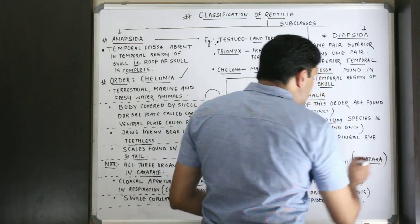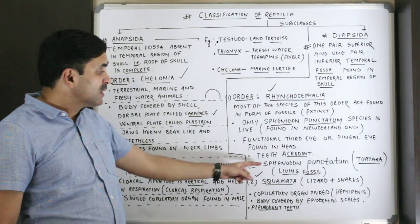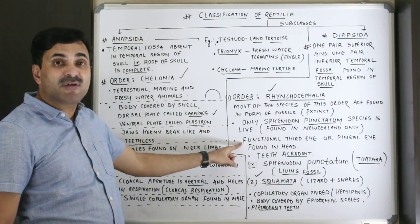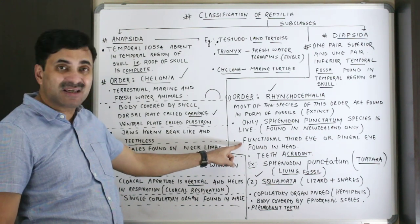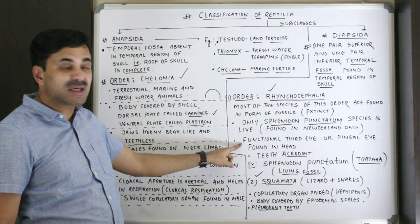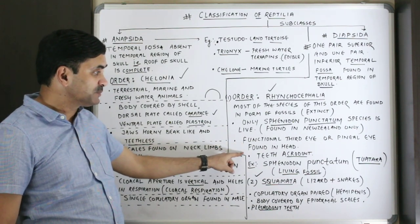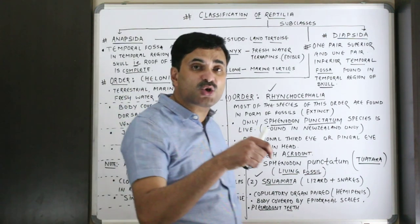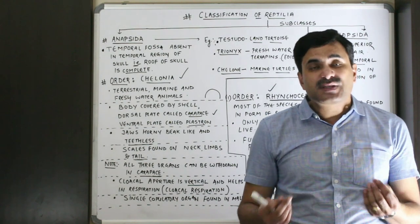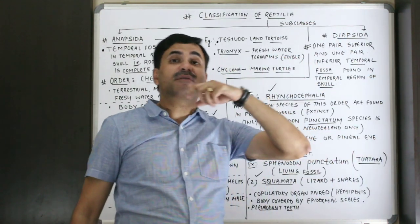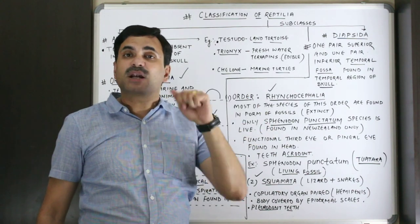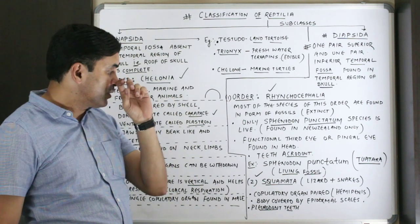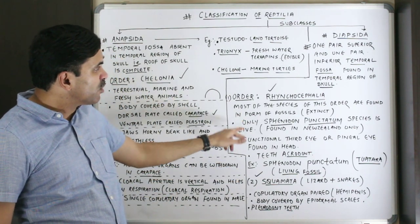Sphenodon punctatum is called 'tuatara' in the New Zealand local language, and it is also called a living fossil. The feature of Order Rhynchocephalia is that they have a functional third eye, also called the pineal eye, found in the head region. The teeth are acrodont — meaning they are not embedded in jaw sockets but are superficially arranged on the jaw bone.